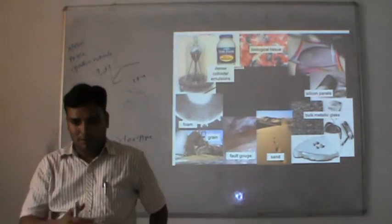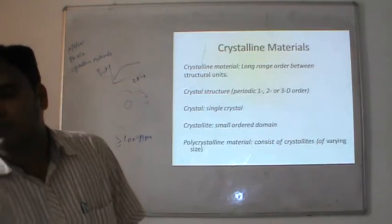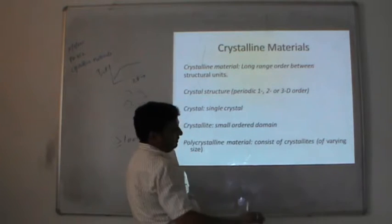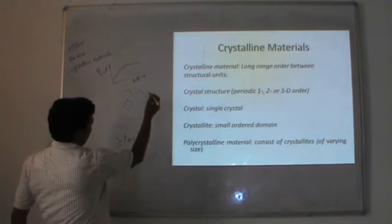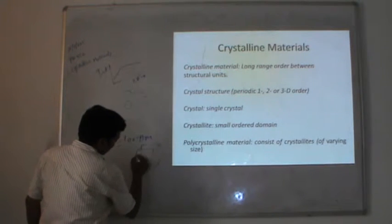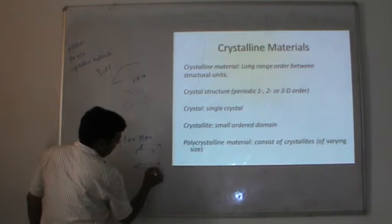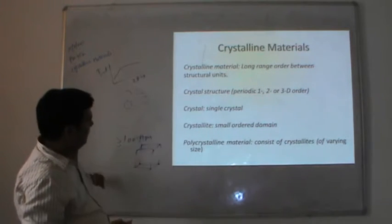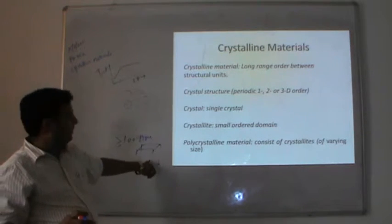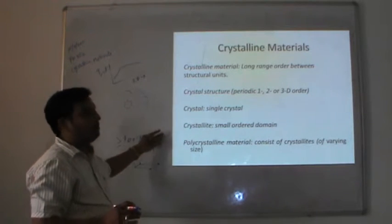Examples shown include foam, grains, oil wells, and sand. Now, when we talk about crystalline materials, the first thing that comes to mind is the cubic structure — simple cubic — where atoms are present on the edges or corners of the unit cell. This is known as the crystalline structure, and in simple cubic structure, all atoms are present on the edges of the cube.